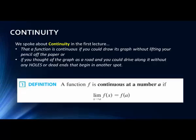In math we have definitions for everything because math is about precision and being very specific, making sure we're all following the same rules. So when we use the same terms or language, we're talking about the same thing. In terms of continuity, we say a function f is continuous at a number a — that's the x-value — if the limit as x goes to a of f(x) equals f(a).